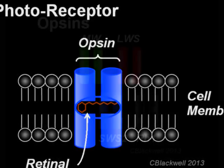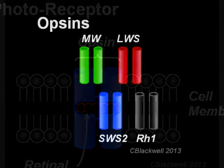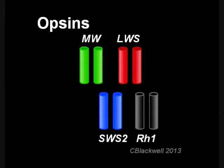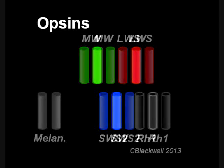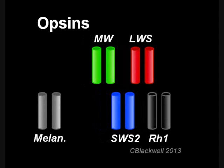Just so we are clear, for vision we humans use four opsins: three for color, and one for vision in low light. To understand the significance of finding melanopsin in the human eye, we will require some background.